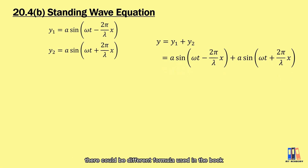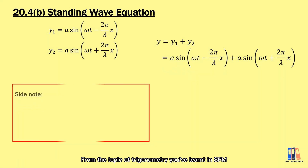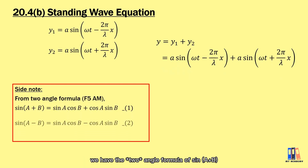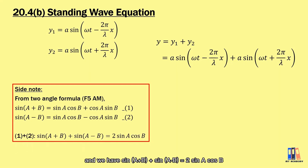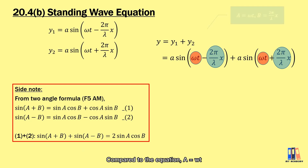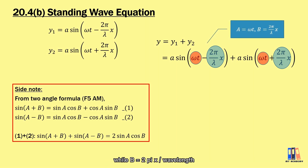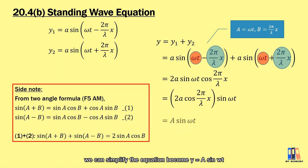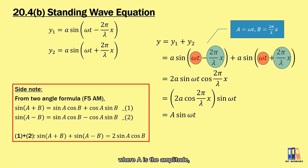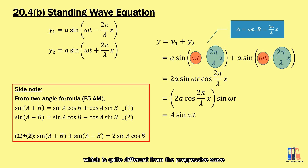To simplify the equation, there are different formulas used in textbooks, but I prefer to derive it directly. From the trigonometry topic in SPM, we have the double-angle formula: sine(a+b) and sine(a−b). Adding them gives sine(a+b) + sine(a−b) = 2 sin(a) cos(b). Comparing with our equations, a corresponds to ωt and b corresponds to 2πx/λ. Applying this formula, we get 2a sin(ωt) cos(2πx/λ). This simplifies to y = A sin(ωt), where the amplitude A = 2a cos(2πx/λ). This is the equation of a standing wave, which is quite different from the progressive wave equation.